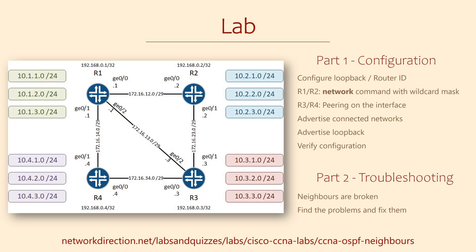Finally, we have the lab. Part one is configuring the topology as shown — this includes configuring a loopback which provides the router ID, configuring peering between all routers, advertising the three connected networks and the loopback IP, and verifying that it's all working. On R1 and R2 you should use the network command with a wildcard mask; on R3 and R4 you should configure peering per interface. You can decide which of these two methods you like best. For part two, it's the same topology but the network is broken — neighbours aren't forming as they should be, so find the faults and resolve them.